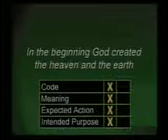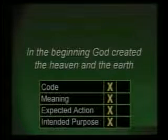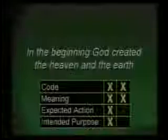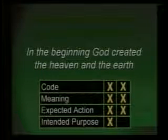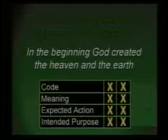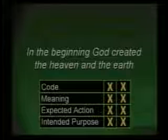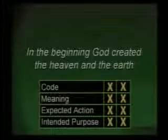Now let's take another sentence: 'In the beginning, God created the heaven and the earth.' Does that meet our definition? Code — it uses an alphabet. Meaning — yes, God represents something real, the heaven represents something real, earth represents something real. Expected action — creation. Intended purpose, which is implied, is for the glory of God. His creation is for his own glory — the heavens declare the glory of God. So what we find in the Bible is information, and that information came from God. He gave us his information.